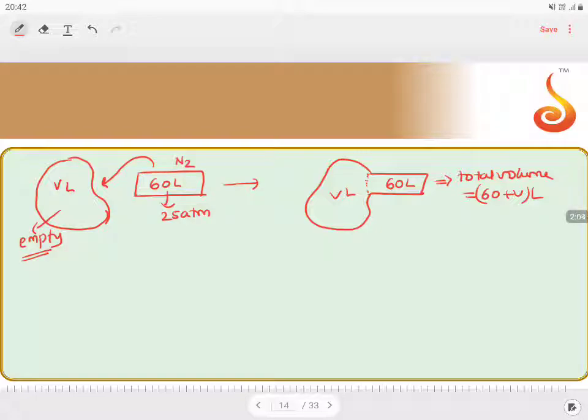So we can say V1 equals 60 liters, P1 equals 25 atm. But when the cylinder is connected to the irregularly shaped tank, now the gas can diffuse into the tank. It will go into the tank and occupy the total entire space of the tank also. Now the gas occupies the total volume of 60 plus additional volume V, total 60 plus V liters. This becomes your V2, and the pressure changed to 3 atmosphere. Now the pressure is 3 atm.